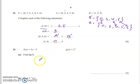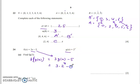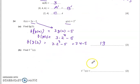Now moving to the functions question. f(x) = 3x − 5 and g(x) = 2^x. To find fg(x): wherever x appears in f(x), replace it with g(x), giving f(g(x)) = 3·g(x) − 5. Since g(x) = 2^x, we get fg(x) = 3·2^x − 5. To find fg(3): substitute x = 3, so 3·2³ − 5 = 3·8 − 5 = 24 − 5 = 19.